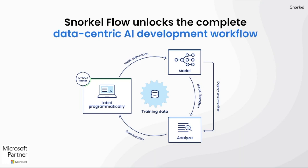SnorkelFlow's unique workflow incorporates programmatic labeling to drastically accelerate what's often the most time-consuming portion of AI development: labeling training data. This is paired with integrated model training and model-guided error analysis so that you can rapidly iterate and achieve high-quality training data and models, even over complex and highly variable data. The net impact is that you're able to train models like custom Form Recognizer models in a fraction of the time compared to labeling training data by hand.